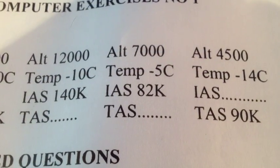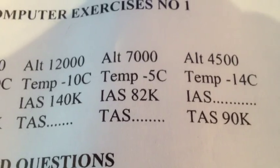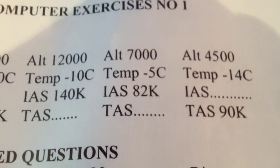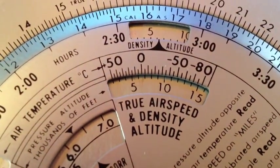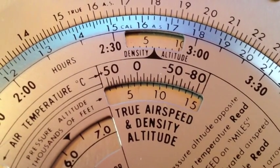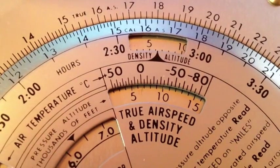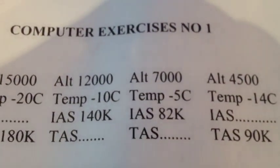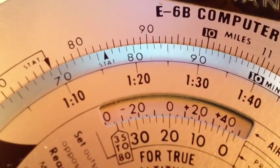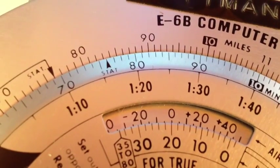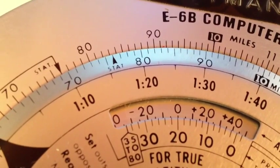Rounding out question number five: pressure altitude 7,000 feet, temperature of minus 5 Celsius, indicated airspeed of 82 knots — what is our true airspeed? Taking a look at our E6B flight computer, these parameters are set into our flight window presenting 7,000 foot pressure altitude and minus 5 Celsius. Looking at 82 knots indicated, it matches up precisely with 90 knots true. Indicated airspeed is on the inside scale; true airspeed is on the outside scale.